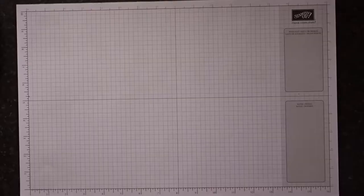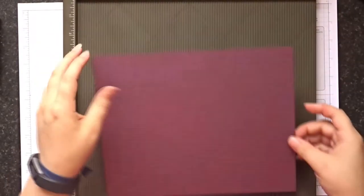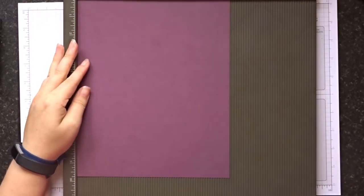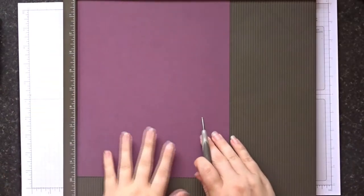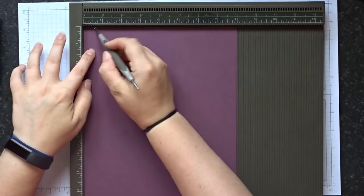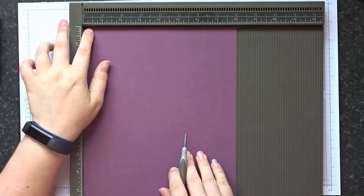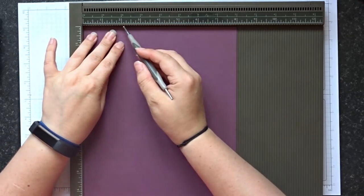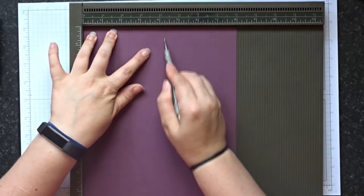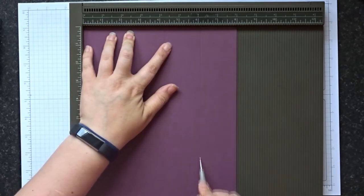Right, let's get started. So you're going to need your scoreboard and a piece of cardstock that is 9 ¾ inches by 8 inches. On the short side, you're going to need to score at half an inch, two and three-eighths of an inch, four and a quarter inches, and six and one-eighth of an inch.